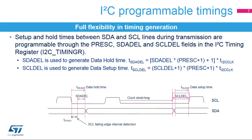The I2C setup and hold times can be configured by software through the I2C timing register. The SDA-DEL and SCL-DEL counters are used during transmission to guarantee the minimum data hold and data setup times. The I2C peripheral waits for the programmed data hold time after detecting a falling edge on the clock line before sending the data. After the data is sent, the clock line is stretched low during the programmed data setup time. The total data hold time is greater than the programmed SDA-DEL counter, as the SDA-DEL delay is only added once the SCL falling edge is internally detected.